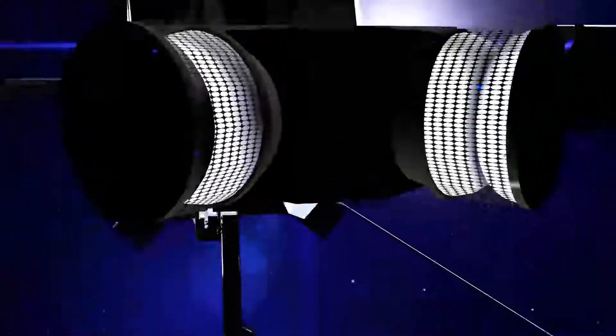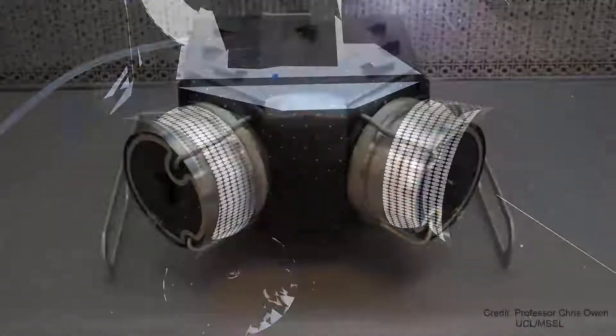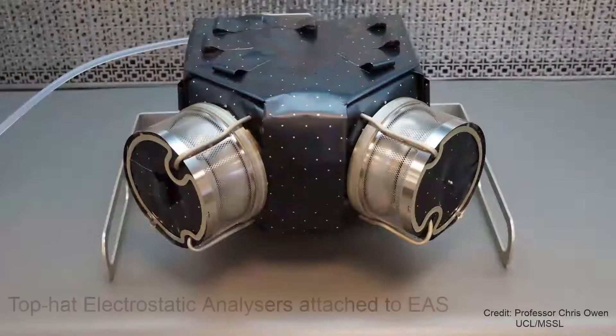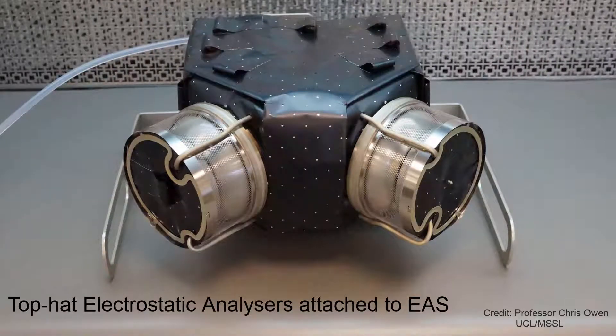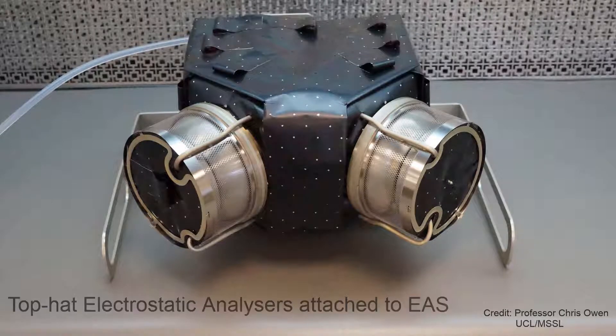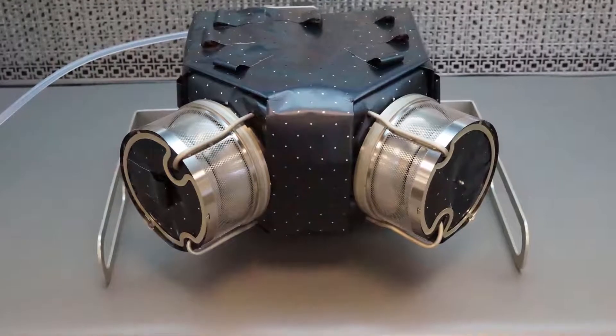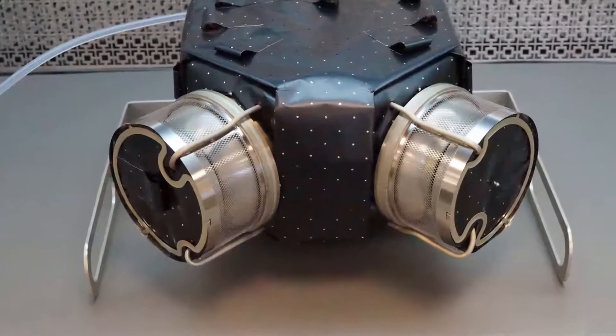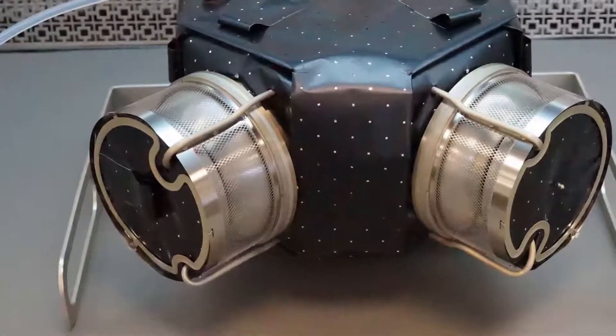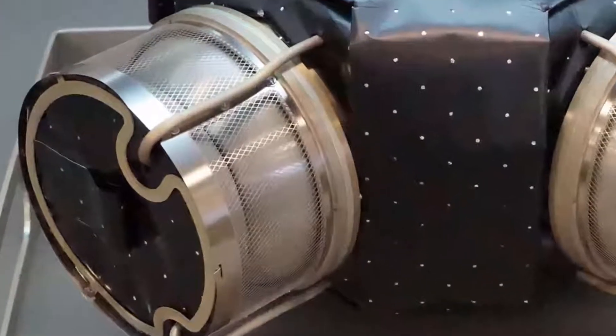And this is where the Top Hat Electrostatic Analyzer comes in. It's the sensor used by the EAS and it has two of them. From this point on, I'll refer to the Top Hat Electrostatic Analyzer as ESA. To make it easier for you to grasp the complexity of this sensor, I will start with a simplified version of it and build my way up to what's actually used on the Solar Orbiter.